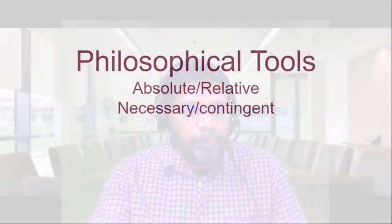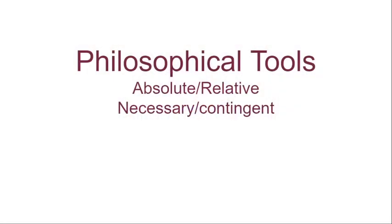In the previous lecture we already discussed two pairs of philosophical tools: a priori knowledge and a posteriori knowledge, and also analytic judgment and synthetic judgment. Today we are going to discuss two other pairs: absolute, relative, necessary, contingent.